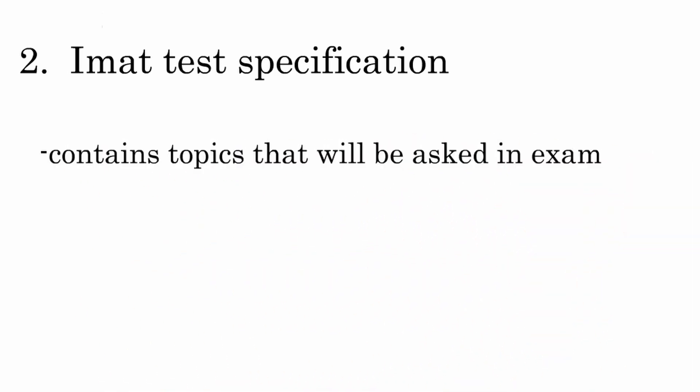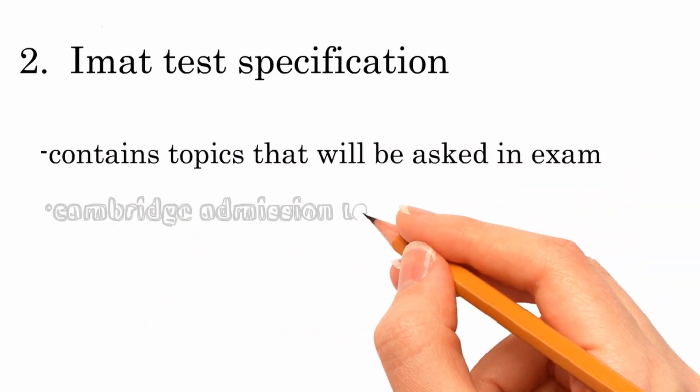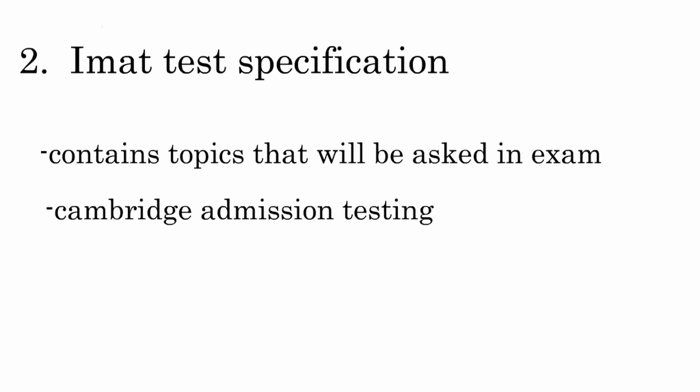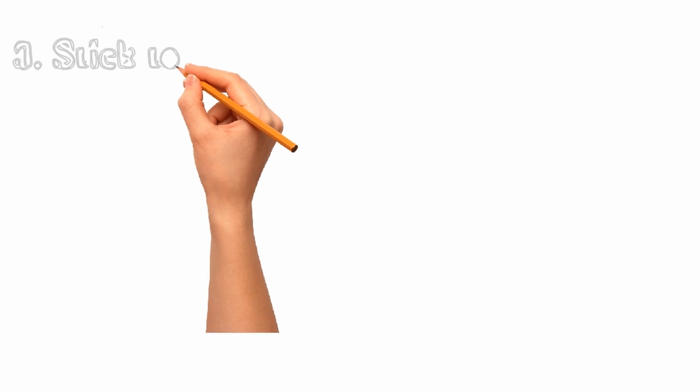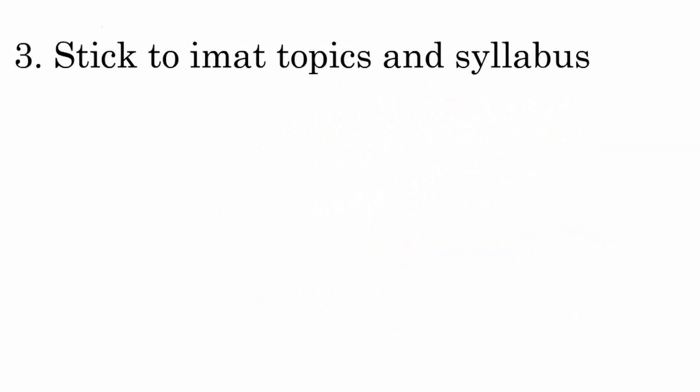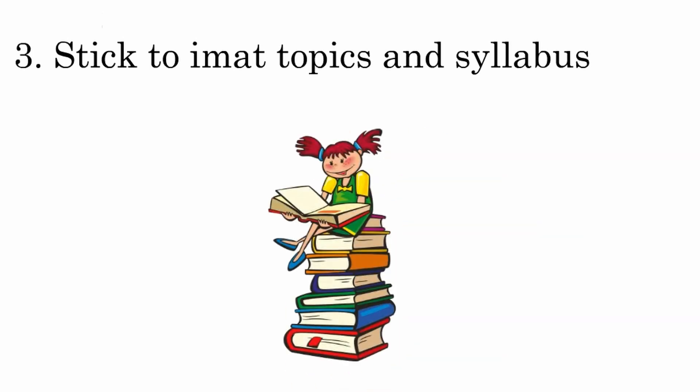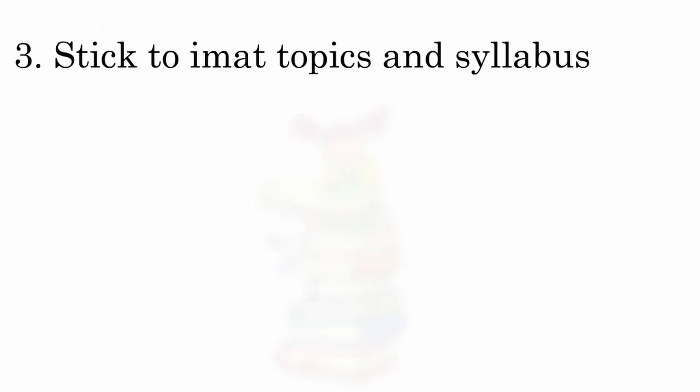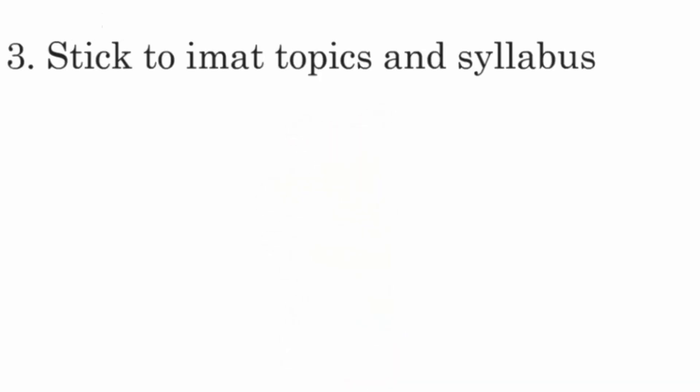The next thing is IMAT test specification. I guess you already know it. It is a list of topics that will be asked in the IMAT exam. It is available for download in the Cambridge testing website. So download it and get familiar with the topics. The next thing is to stick to IMAT topics and syllabus. All the sections in IMAT are very broad on their own. As we know, vast amount of information is available everywhere but this is completely unnecessary for IMAT. Just stick to the IMAT syllabus and the IMAT topics.